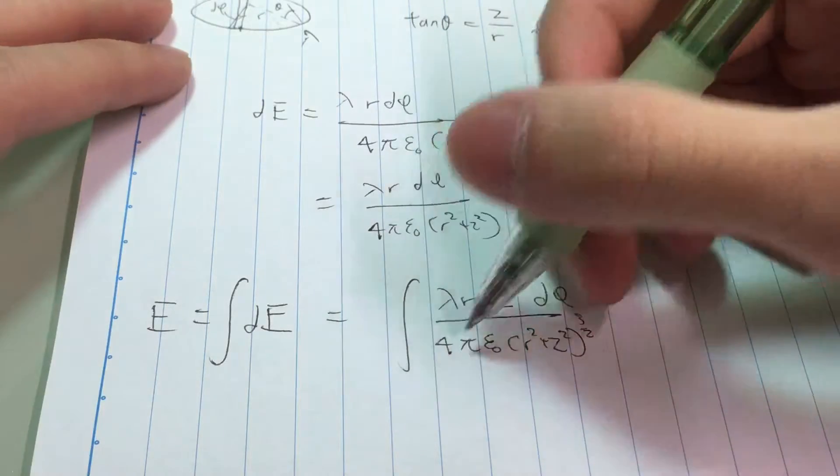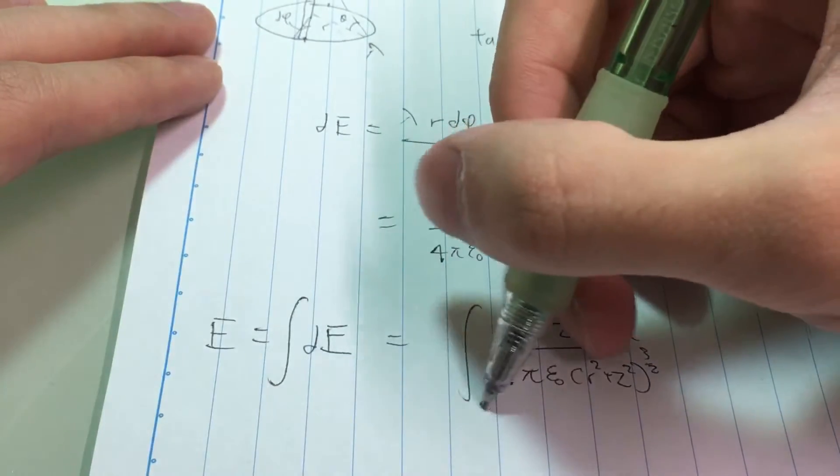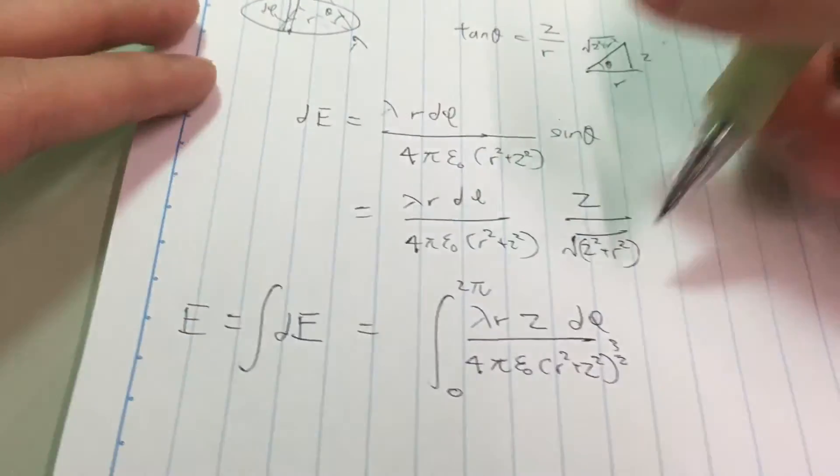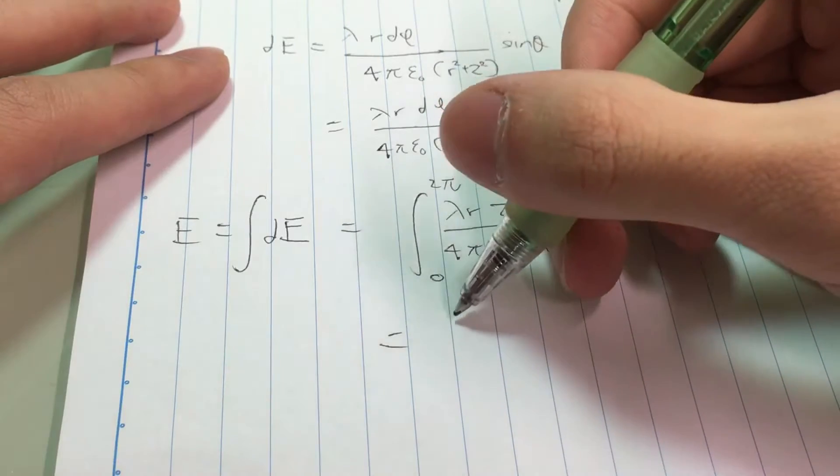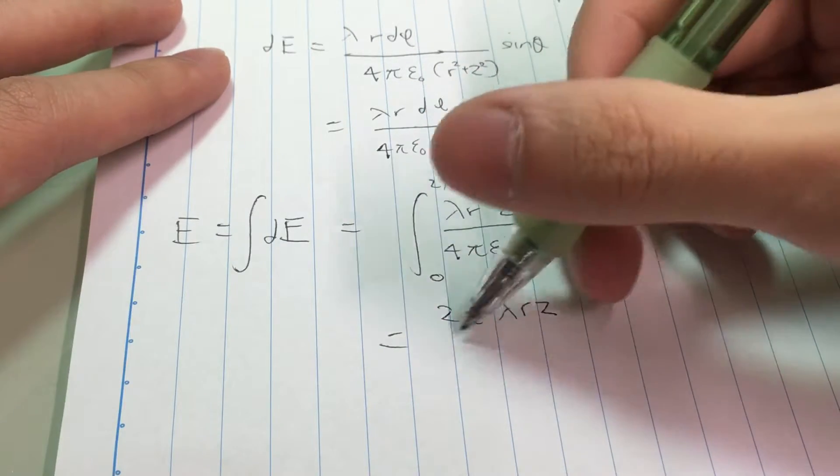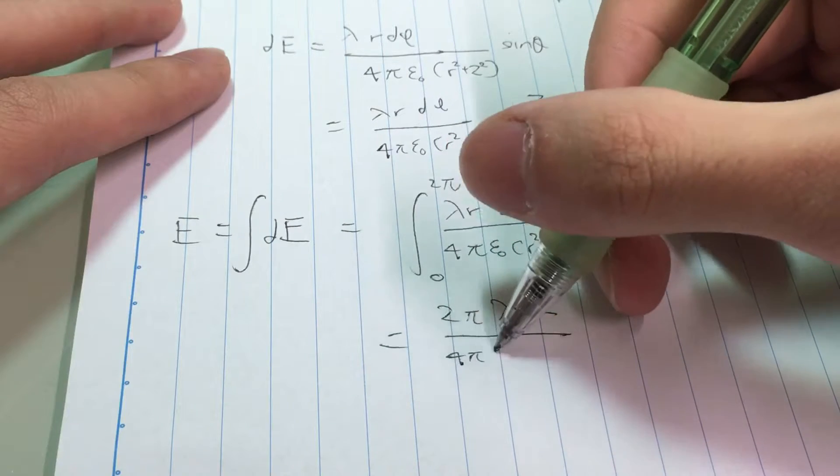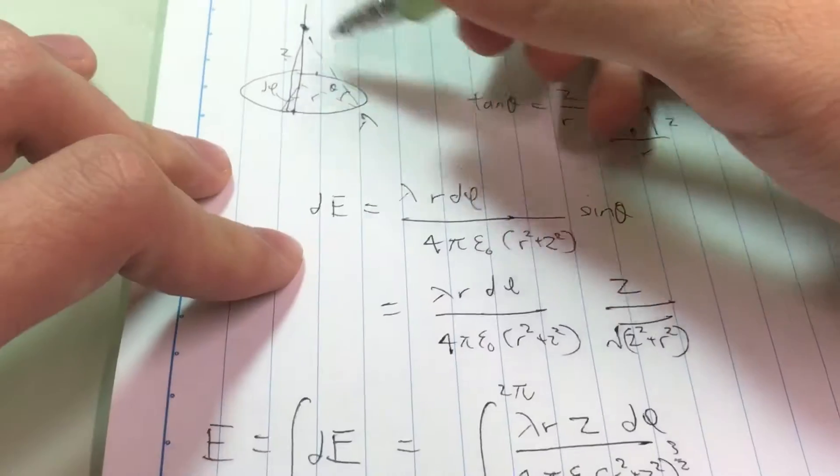The variable in this integral is phi, and all of these are constants. Since we're considering a circle, phi goes from 0 to 2 pi. This is one of the easiest integrals ever. This entire thing is a constant, so all you have to do is just multiply by 2 pi. And then we're done. This is the electric field at this point.